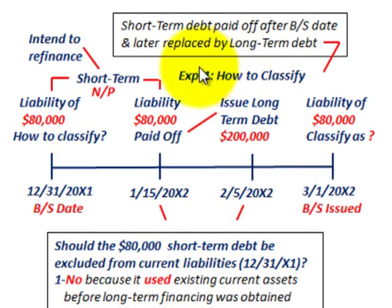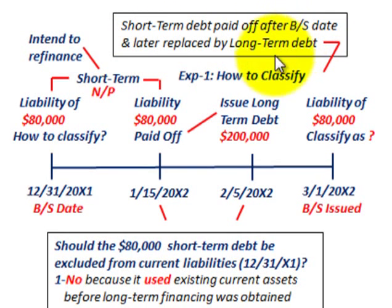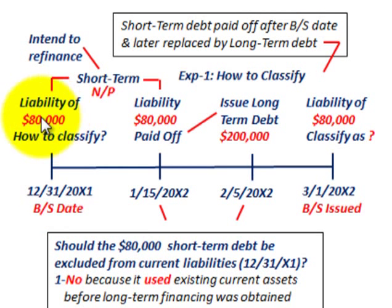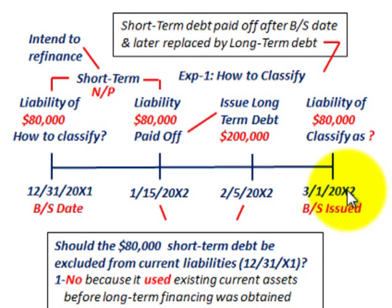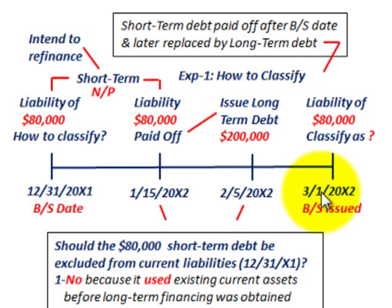In Example 1, we're looking at classifying short-term debt to long-term debt. Short-term debt will be paid off after the balance sheet date and later replaced with long-term debt. On 12-31-20X1, that's the balance sheet cutoff date, and we have a liability of $80,000 — a notes payable short-term liability. We intend to refinance this notes payable. The balance sheet will be issued on 3-1-20X2, and we need to determine how the $80,000 liability should be classified on the balance sheet when issued.